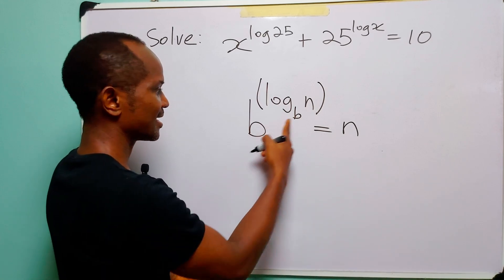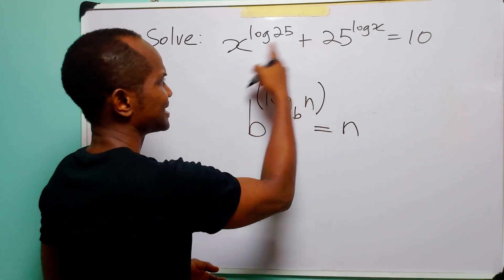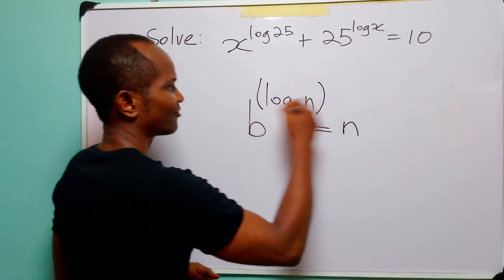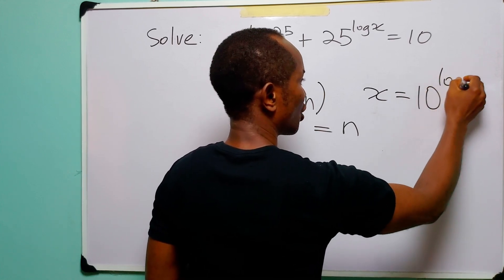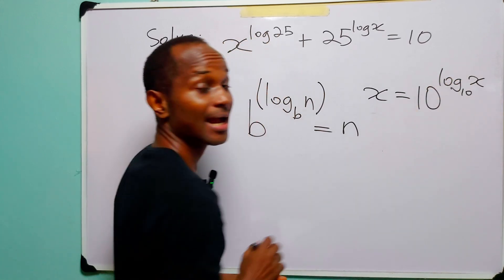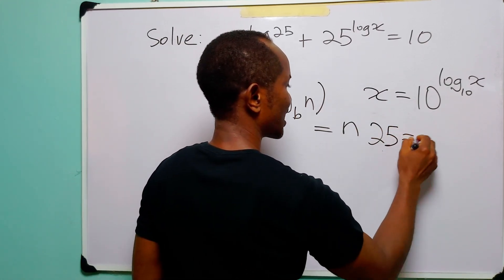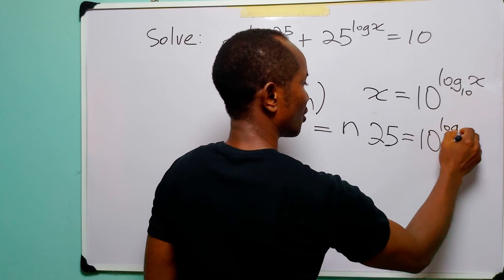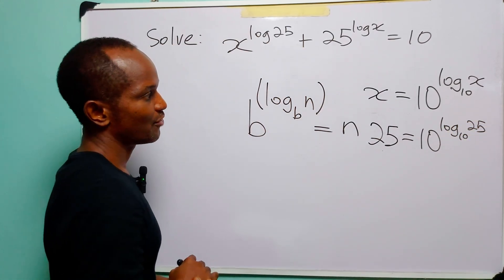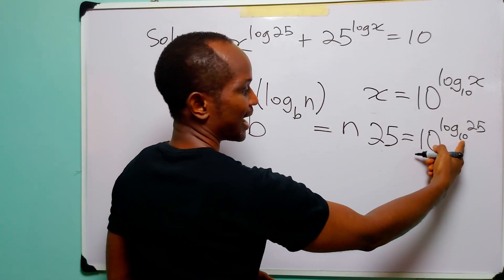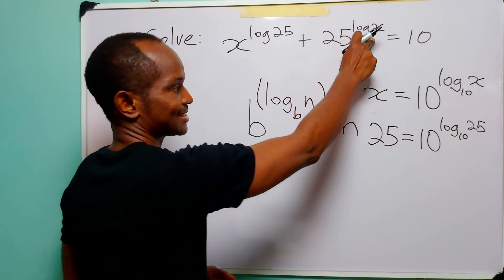Notice that we have b here and we have b here, n and n. So that means that in this equation, we can write x as 10 to the power log base 10 of x. And we can also write 25 as 10 to the power log base 10 of 25. Remember that when we are working in base 10, it is customary not to add the 10.